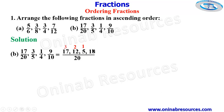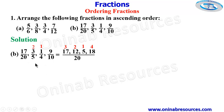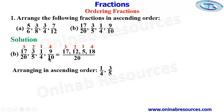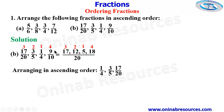The smallest numerator here is 5, then 12, then 17, and then 18. This means the smallest fraction is 1/4, then 3/5, then 17/20, and the largest is 9/10. So arranged in ascending order: 1/4, 3/5, 17/20, and 9/10.